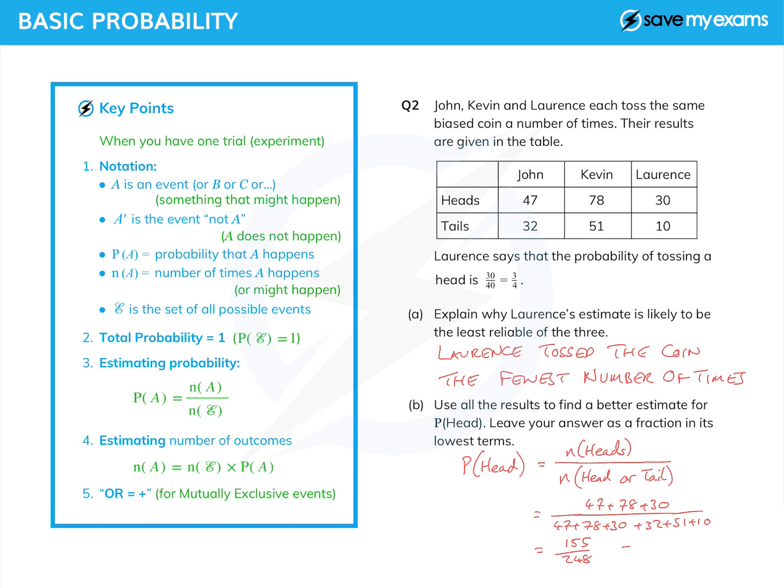But we do need to cancel that down. And in fact, it cancels down very neatly to give five eighths. How you do that is up to you. I used a calculator. So there we go.